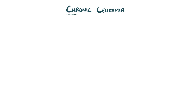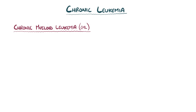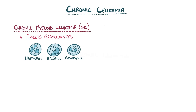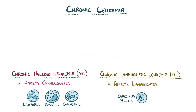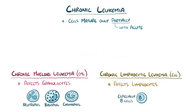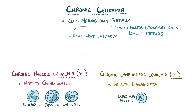There are two types of chronic leukemia. The first is chronic myeloid leukemia, or CML, which is caused by a particular chromosomal translocation that affects granulocytes. The second is chronic lymphocytic leukemia, or CLL, which is caused by a variety of chromosomal mutations that affect lymphocytes, in particular B cells. Both CML and CLL cause cells to mature only partially, and that's a key distinction from acute leukemias, where the cells don't mature at all. As a result, these abnormal, premature leukocytes don't work effectively, which weakens the immune system.